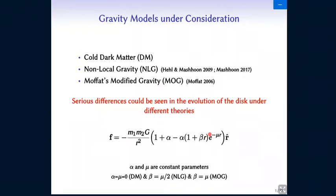You have seen so far that the appearance of this Yukawa term in the equations results in very serious differences in the evolution of these galaxies. Just notice that if we consider alpha and mu to be equal to zero, we are going to derive the Newtonian force between two mass point particles.